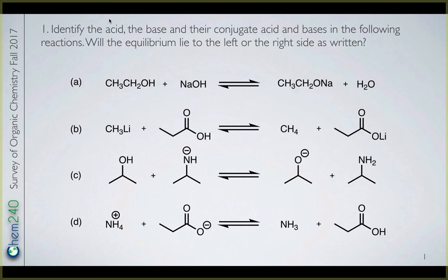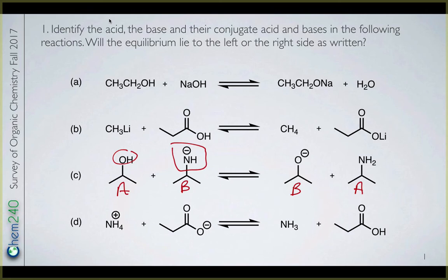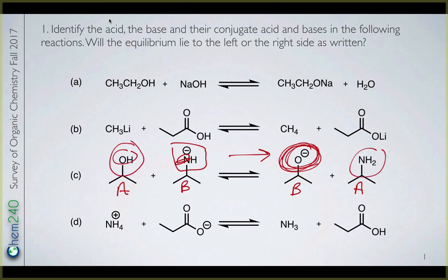In part C, we have an alcohol functional group and an NH minus functional group. The one with the negative charge should be identified as the base, the OH as the acid. The conjugates of those — the acid will become the alkoxide, that's the base on the right side, and the acid on the right side is the NH2, the species which has picked up the proton. Now, the equilibrium will lie far to the right because of the difference in electronegativity. Nitrogen is less electronegative than oxygen. We can look at this in terms of the base strengths on either side, or if you know the pKa's, you could look at the pKa difference.